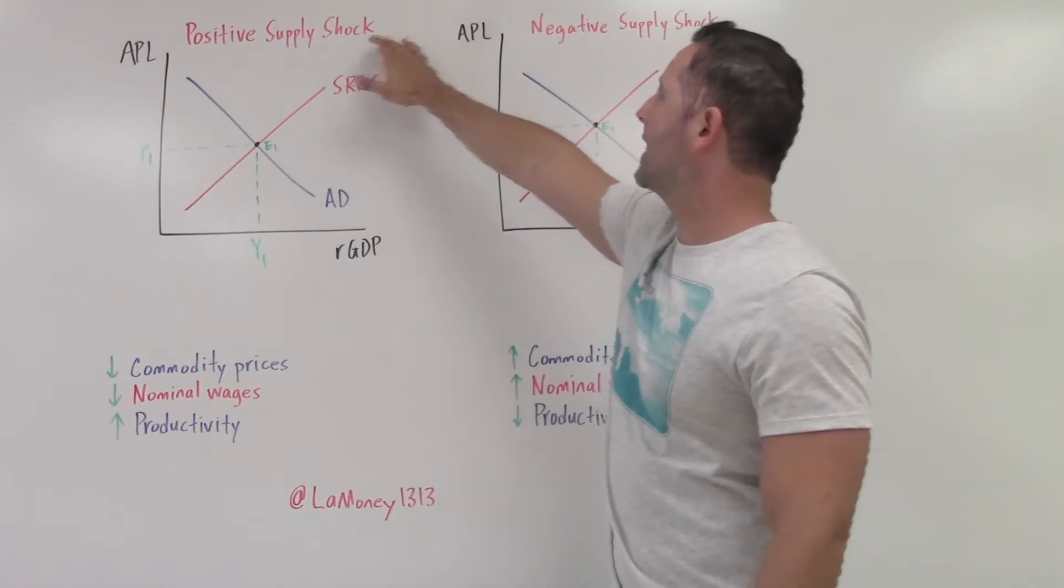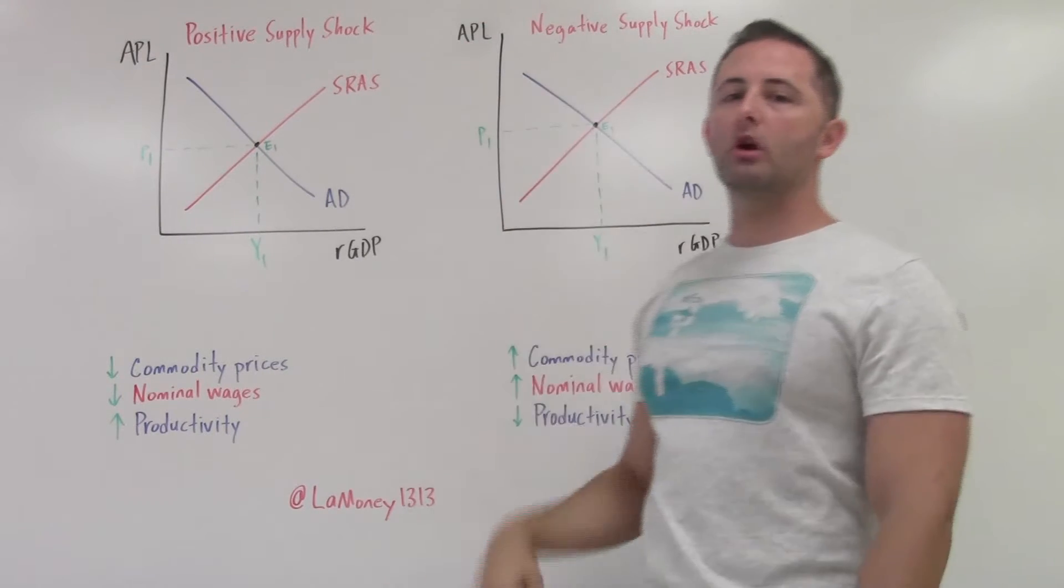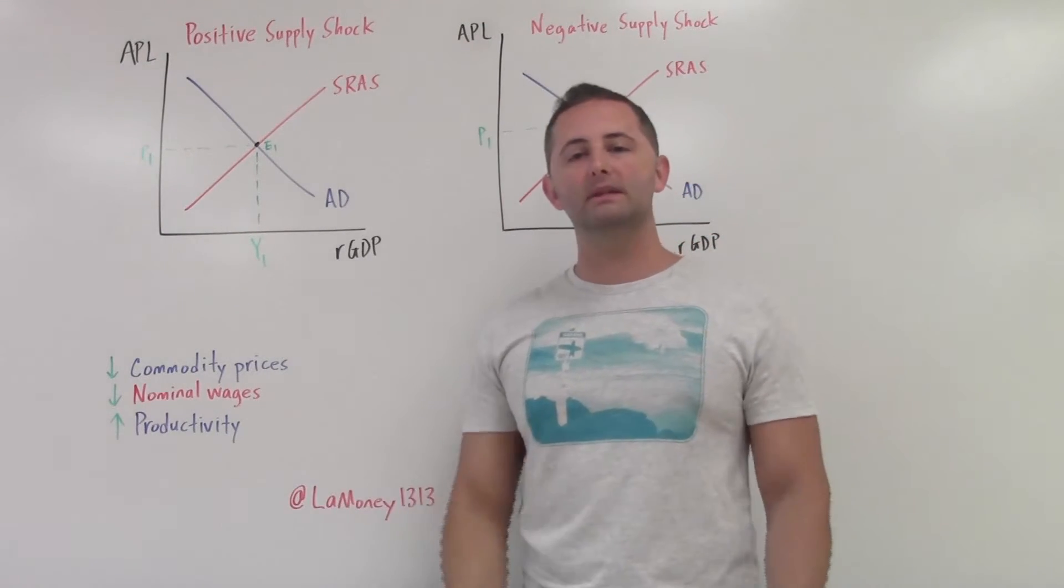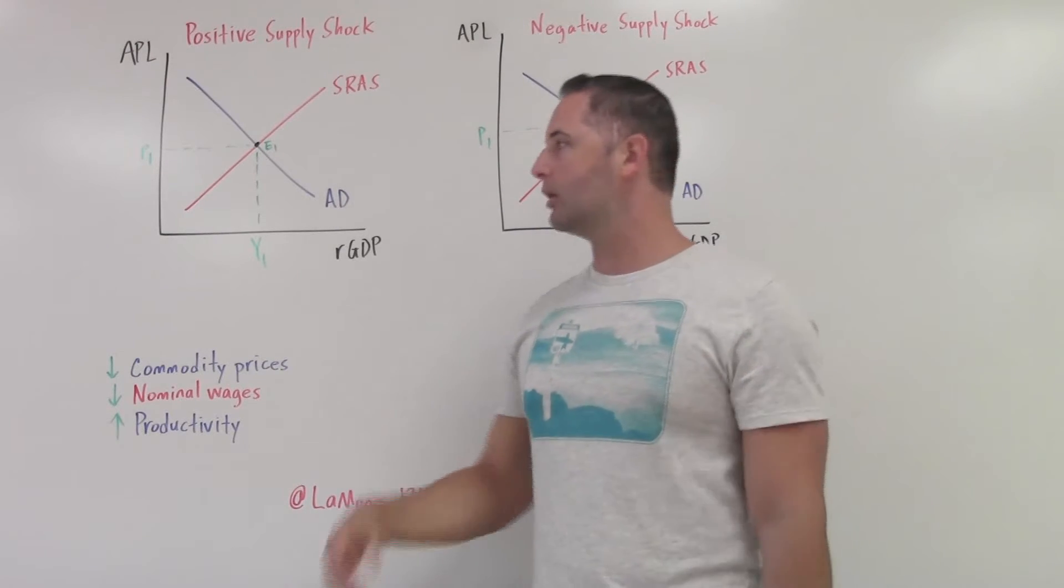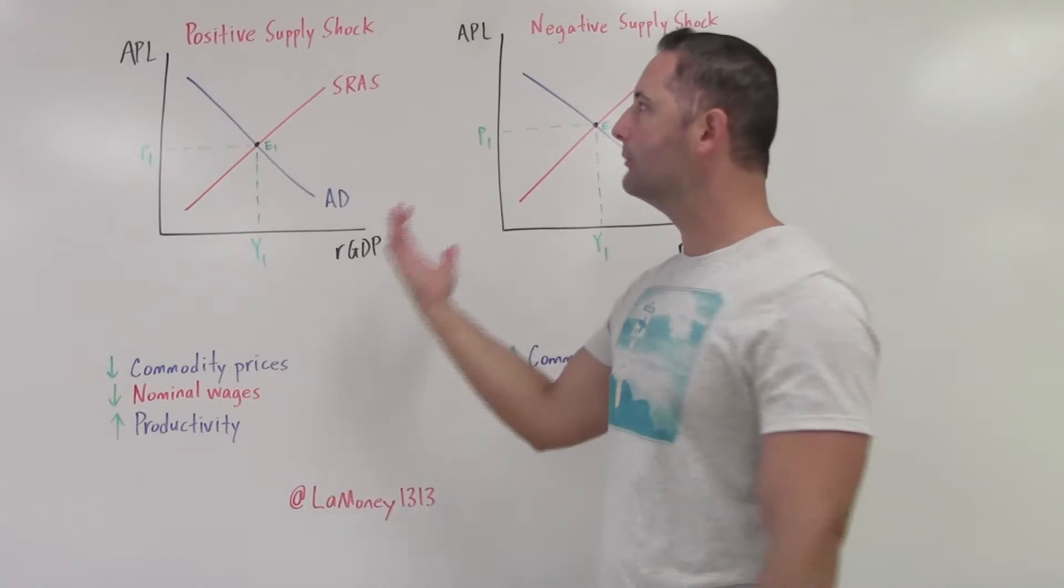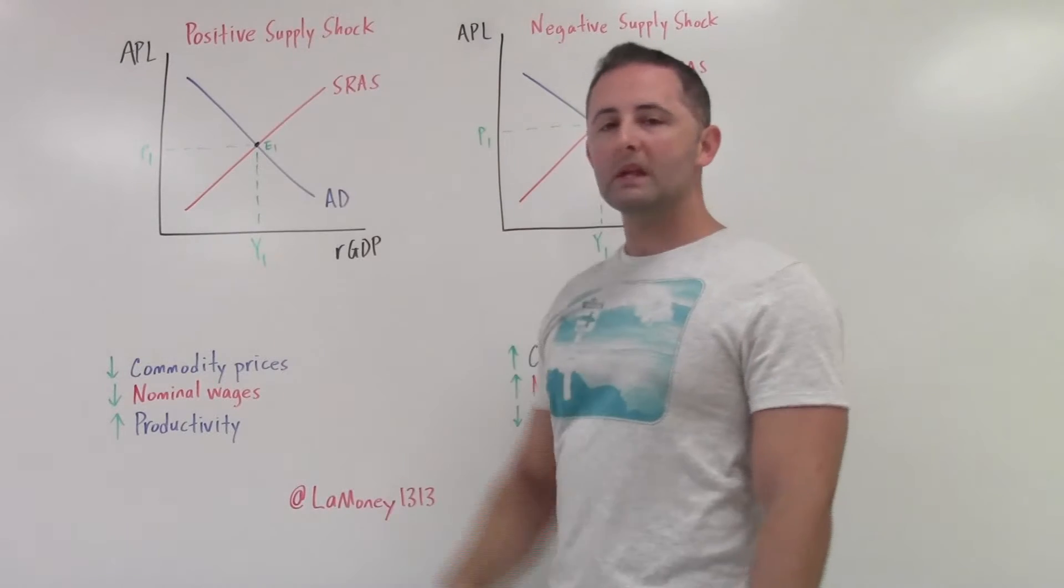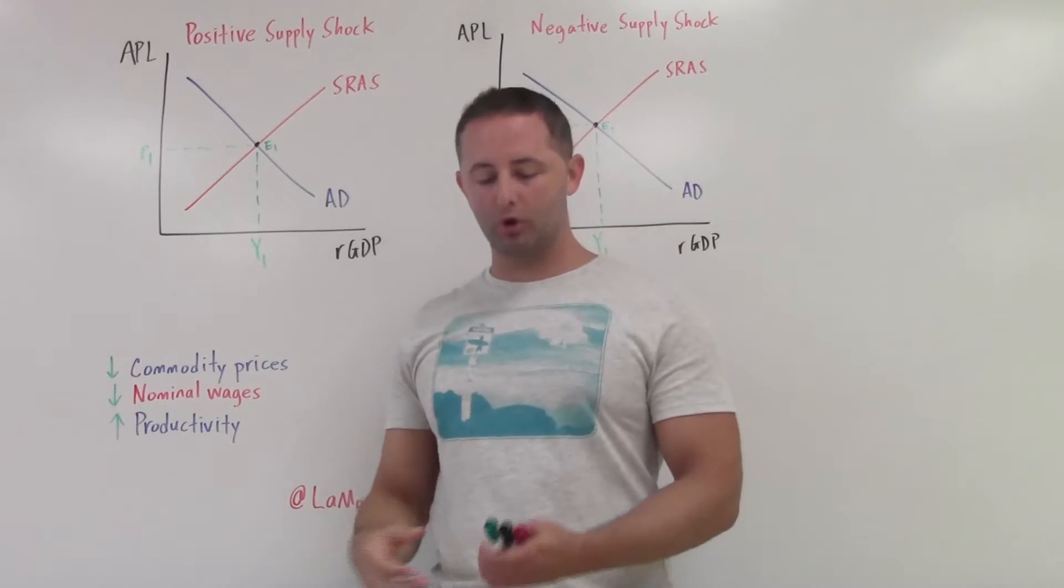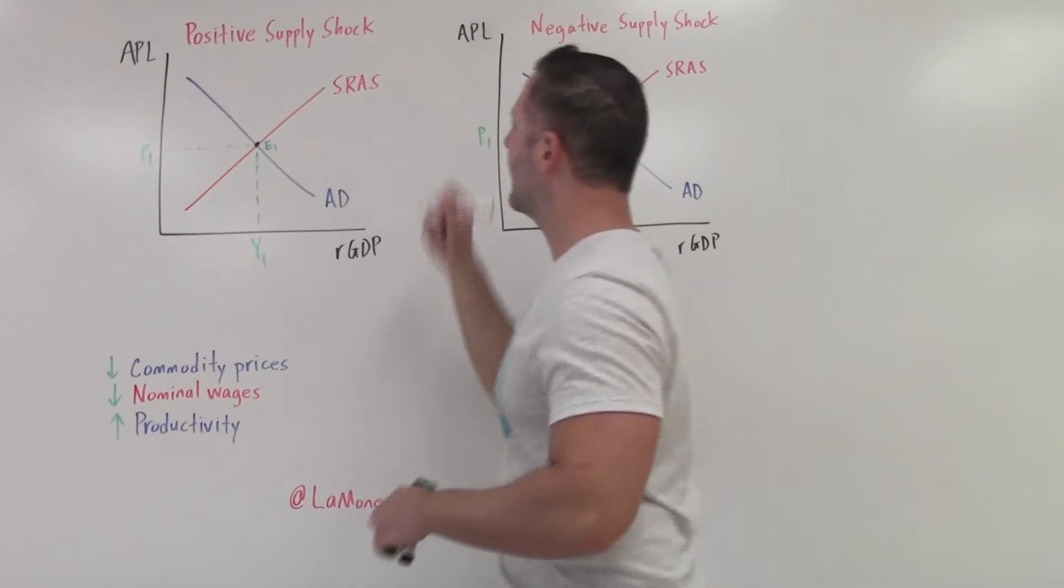When we see the term positive supply shock, negative supply shock, we're talking about something has happened that increases aggregate supply or decreases aggregate supply. So positive, something good has happened. It's going to increase short run aggregate supply. So we'll first start by modeling that.